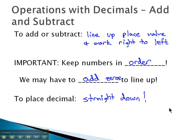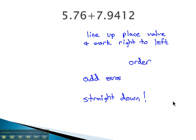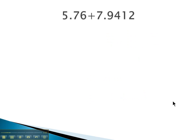So for example, if we have the problem 5 and 76 hundredths plus 7 and 9,412 ten thousandths, when we line this up as an addition problem, it's gonna be very important we line up the place values or the decimal digits, keeping them in order, 5.76 and 7.9412.